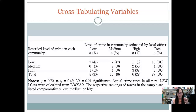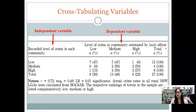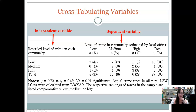Here's an example of a crosstab. We have the recorded level of crime in the community — the actual level of crime — and the level of crime estimated by the local police officers. The level of crime is the independent variable because it just is what it is; it's not going to be affected by what the police think it is. The level of crime estimated by the local officer is the dependent variable. This tests whether there is a relationship between the actual level of crime in a community and how that's estimated by the officer.